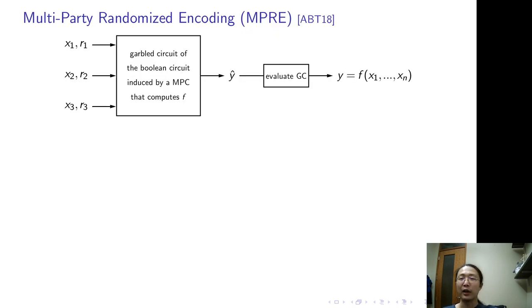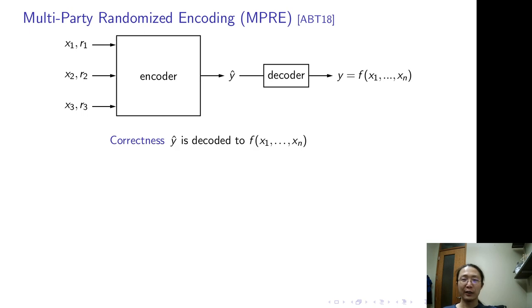In ABT, they also provide a simpler high-level abstraction. So let's forget the garbled circuit. It's just an encoder - an encoder that takes parties' private inputs and local randomness and outputs an encoding. The decoder will map the encoding to the function output. Multi-party randomizing encoding, or MPRE for short, is the combination of such encoder and decoder.